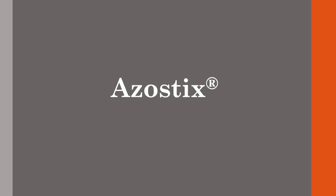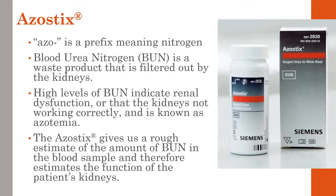Azostix. Azo is actually a prefix meaning nitrogen, and blood urea nitrogen — or BUN — is a waste product filtered out by the kidneys. If an animal has a high level of BUN, it indicates renal dysfunction, meaning the kidneys are not working correctly. This is known as azotemia — azo meaning nitrogen, emia meaning blood. Azostix give us a very rough estimate of the amount of BUN in the blood sample and therefore a very rough estimate of kidney function. It's not a great test, but if we get a high reading, we want to investigate more with a full chemistry panel.